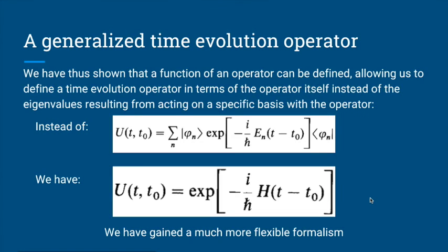Because we now have a formal definition of what it means to take a function of an operator, we can take our initial definition of the time evolution operator — where we had to express it in terms of some complete basis set — and say we actually didn't need to do that. We could have left it as the Hamiltonian. So now we can express time evolution as a function of the Hamiltonian operator, giving us a much more flexible formalism.